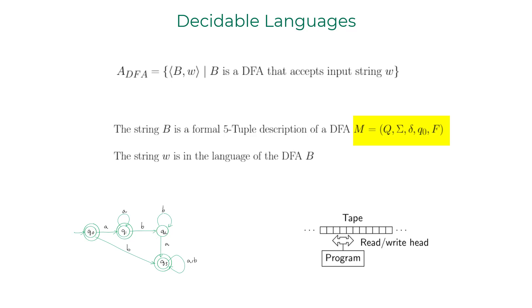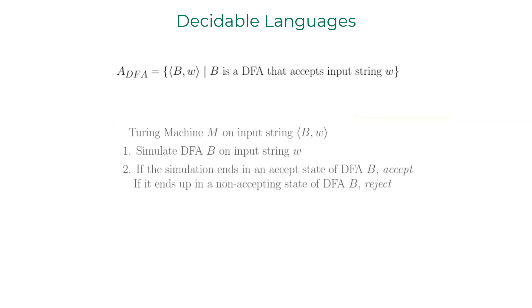Here is the informal description of the Turing machine M that decides A_DFA. First step, simulate B on input w. If the simulation ends up in the accept state of the simulated DFA, then end up in the accept state on the Turing machine. If it ends up in a non-accepting state in the simulated DFA, then end up in a reject state on Turing machine.